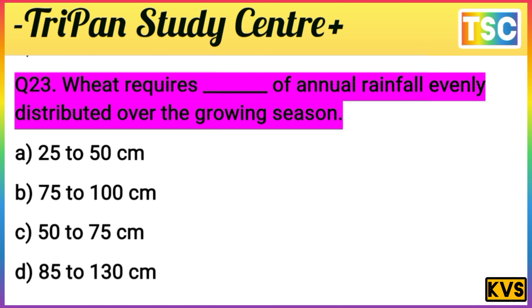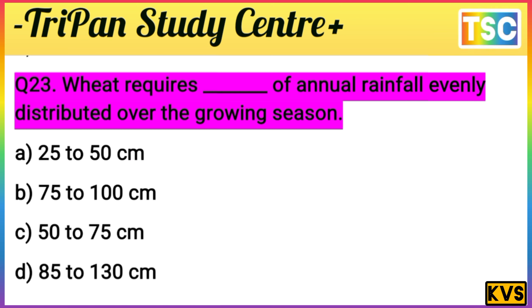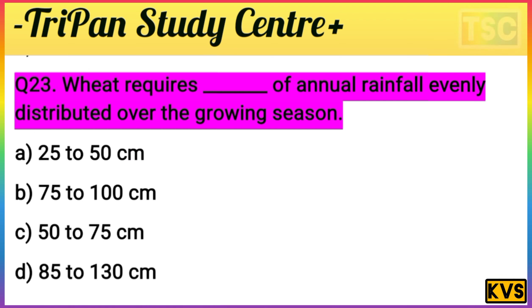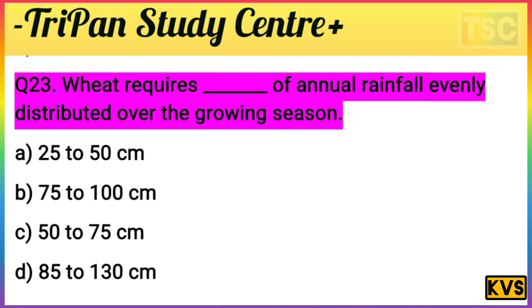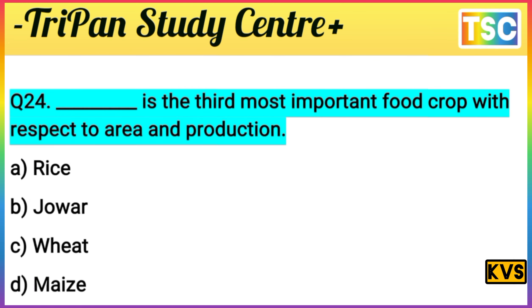Wheat is the most important crop. Option A — 25 to 50 cm — is not ideal. Option B — 75 to 100 cm — is too high. Option C — 50 to 75 cm — is the right answer because wheat requires 50 to 75 cm of annual rainfall, evenly distributed over the growing season. Option C is correct.